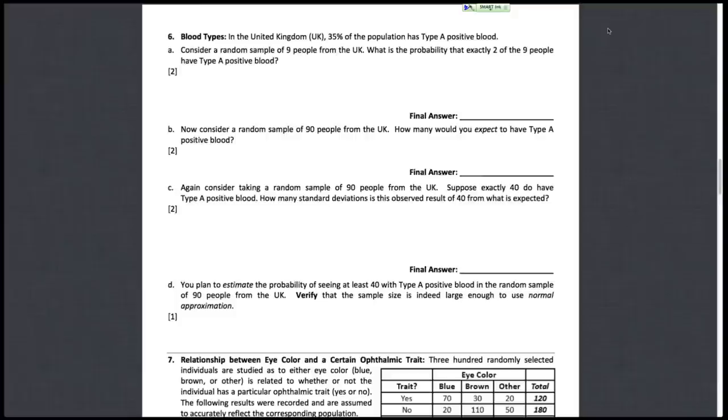Alright, so first off, in the UK, 35% of the population has type A positive blood. So consider a random sample of nine people from the UK. What's the probability that exactly two of the nine people have type A positive blood?